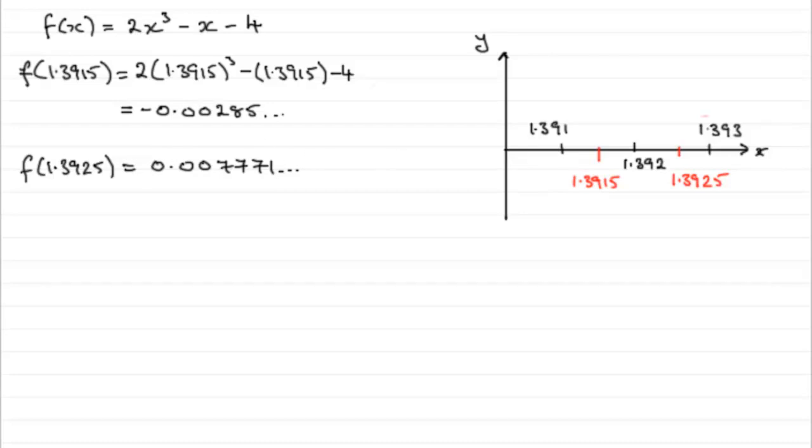So our graph has gone from a negative value down here to a positive value. So we know that assuming this graph is continuous, which it is, there's no break in the graph. In other words, it will have crossed somewhere in this interval. I don't know whereabouts, but I do know that it's crossed somewhere in the interval.